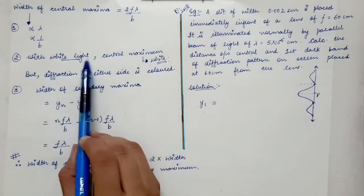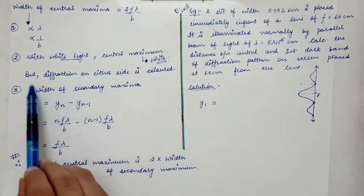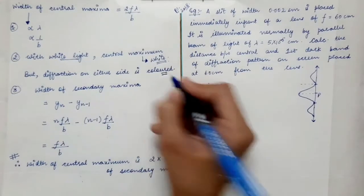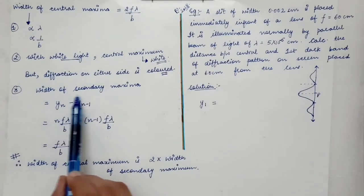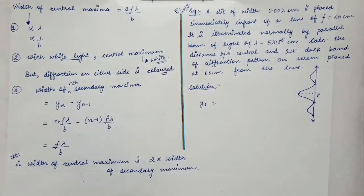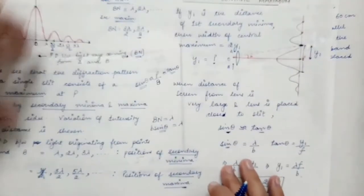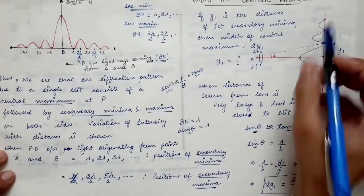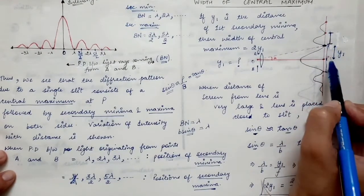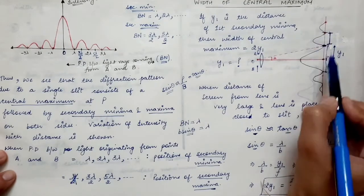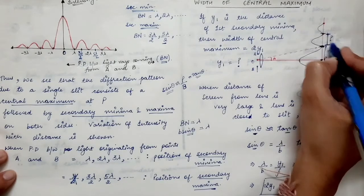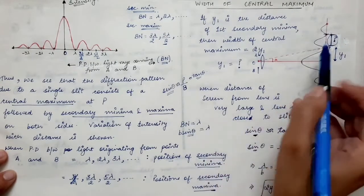The central band in the case of white light is white in color, but the diffraction pattern on both sides of the central maximum will be colored. To find the width of the nth secondary maximum: for example, to find the width of the first secondary maximum, you find the distance of its bounding minima from the center and subtract them. That distance is the width of the secondary maximum.